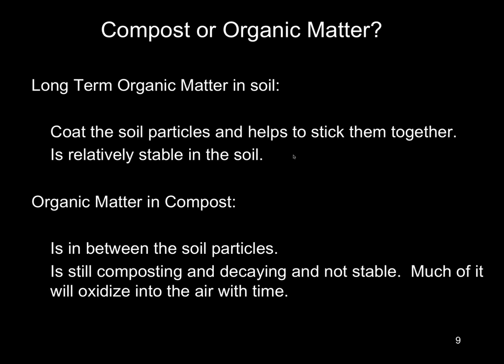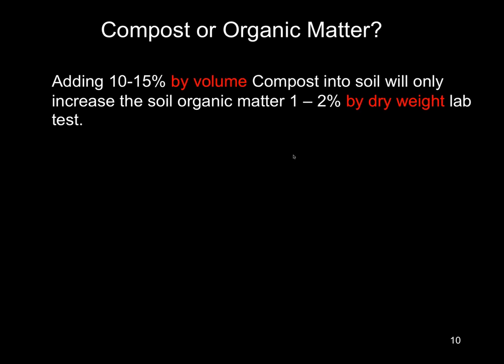The organic matter in compost, when you mix it into the soil, is just blobs of composting material between the soil particles — separated from them. It's still composting and decaying, and it's not stable. So much of the organic matter in a soil test of a compost-soil mix is going to oxidize out of the soil over time as carbon dioxide and really just disappear. It's a totally different kind of arrangement.